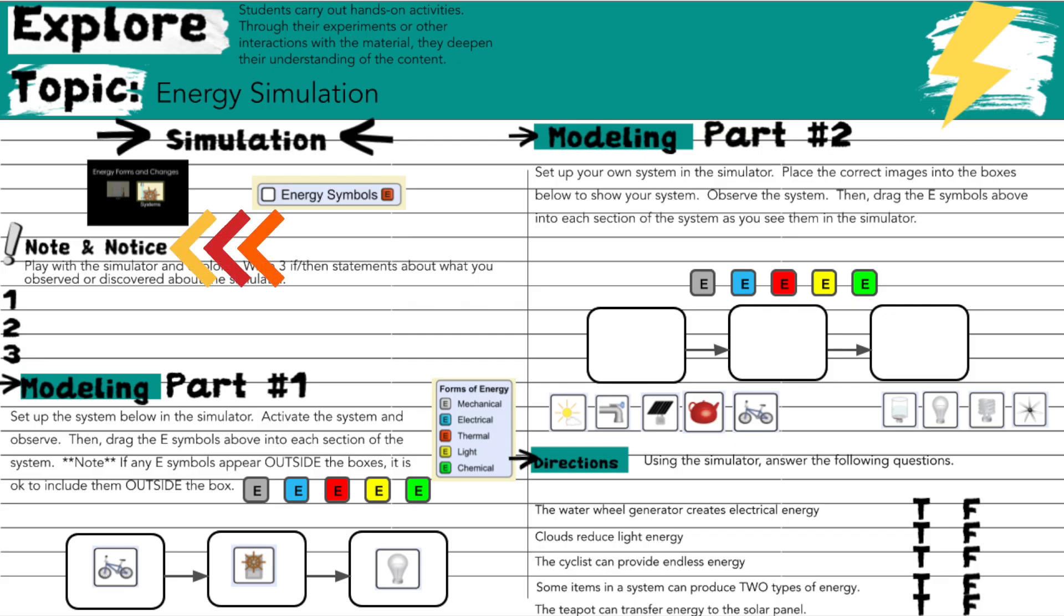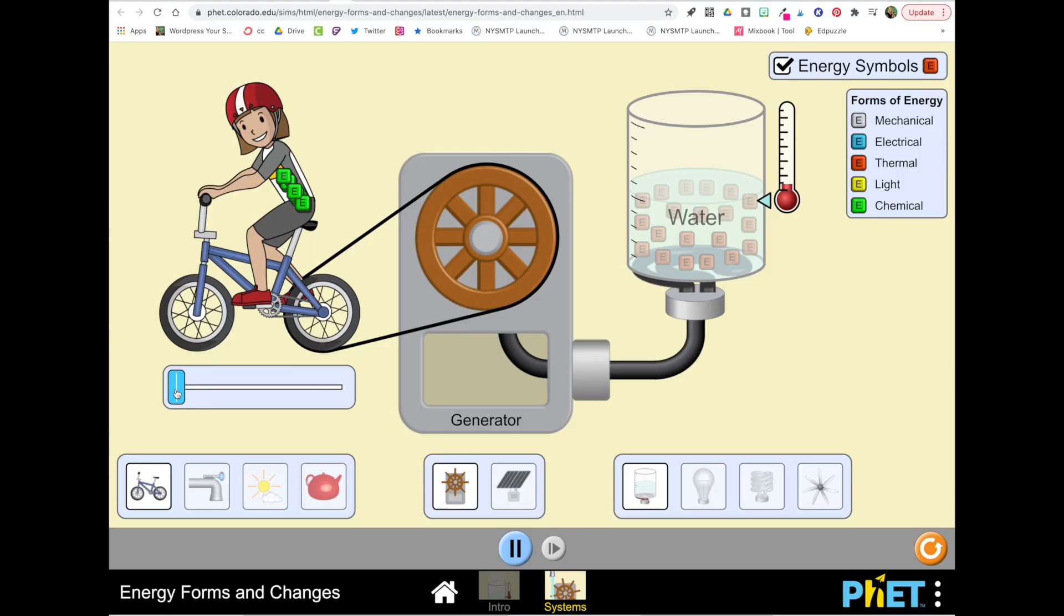On our notebook page, our first step is to complete a note and notice section. In this step you're going to be encouraged to play with the simulator. Take a look at all the different components. As we look at the sim we can see three different sections.